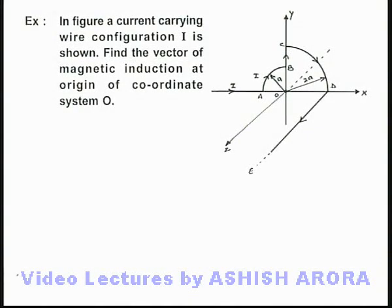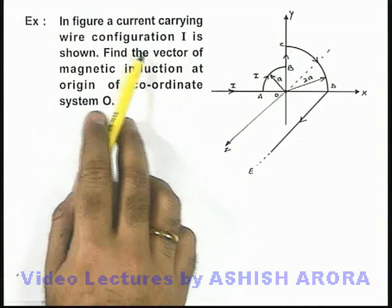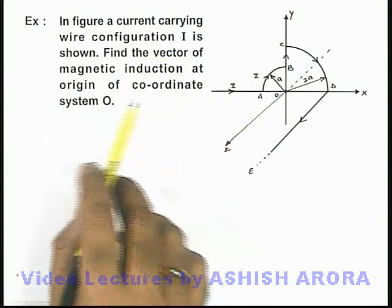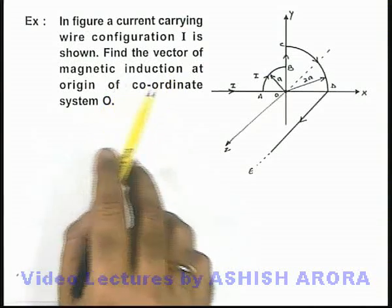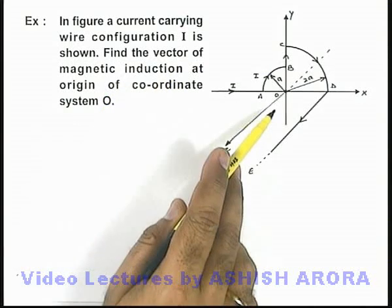In this example, we are given a current-carrying wire configuration I as shown in the figure, and we are required to find the vector of magnetic induction at the origin of coordinate system O.